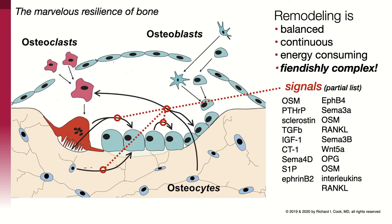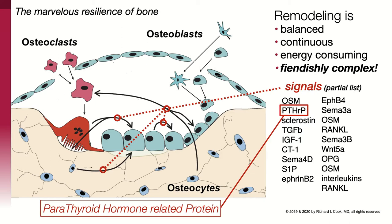Remodeling is balanced, continuous, and energy consuming. Bone is being laid down and chewed up in about a one-to-one ratio, so overall you don't feel like your skeleton is changing. The signaling is fiendishly complex — there are at least 20 or more molecular signals that have influence over that. Among those signals is one called PTHRP, the parathyroid hormone-related protein. All of the signaling going on is a very dense network of communication by various kinds of chemicals being sensed and excreted by the cells that make up the bony active surface.